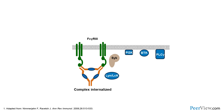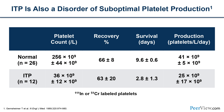ITP is also a disorder of suboptimal platelet production. Terry Gernsheimer did platelet kinetic studies using technetium-labeled platelets. Normal persons had platelet counts around 256,000 with survival of 9.6 days and a production rate of 41 units per day. ITP patients with platelet counts of 36,000 had survival reduced to 2.8 days, but platelet production was also reduced — an innovative finding now well established.